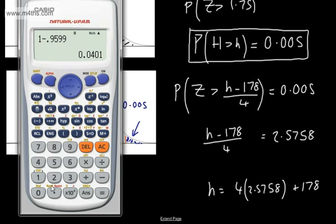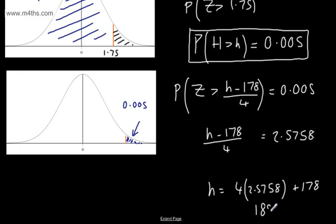So let's just push that through here, and we will get that value. So we've got 2.5758, and to that we're going to add the 178. So what do we end up with? 188.3.